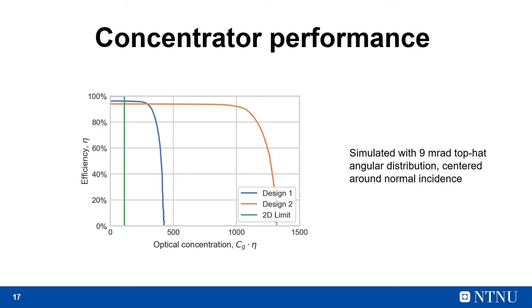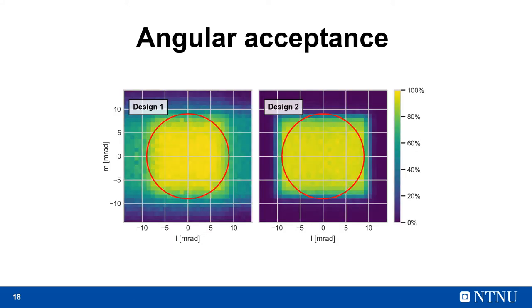Let's look a bit closer at these performance claims. Here is a plot of optical efficiency versus concentration ratio. At our conditions, the two-dimensional concentration limit is 111 suns, as shown in green, and we can see that both example designs achieve significantly higher concentration. We optimized and simulated the concentrators under a plus minus 9 milliradian angular distribution, illustrated by these red circles in angular space. And the plot shows how the acceptance angles of the concentrators are matched to this angular distribution.